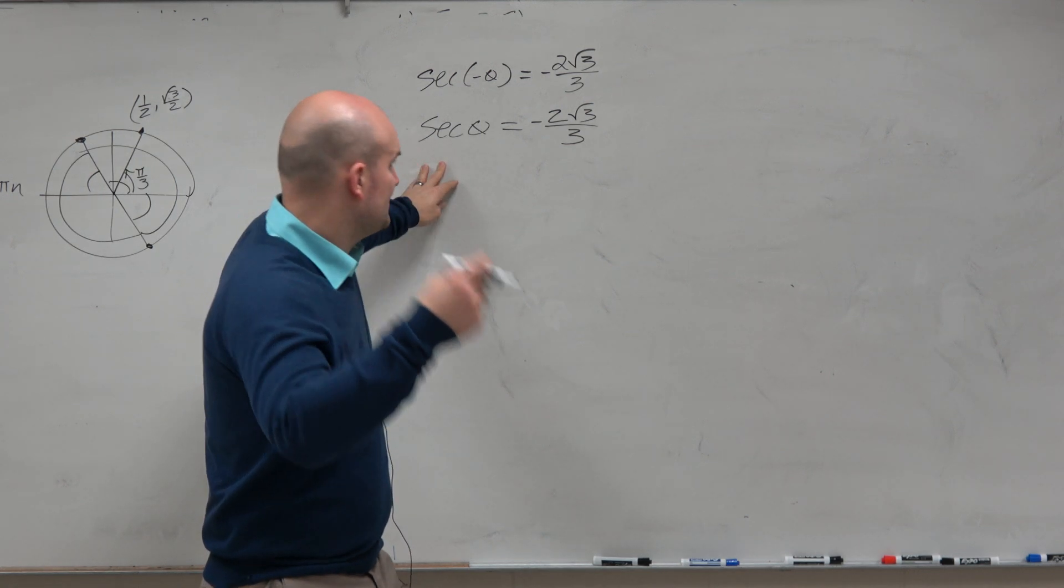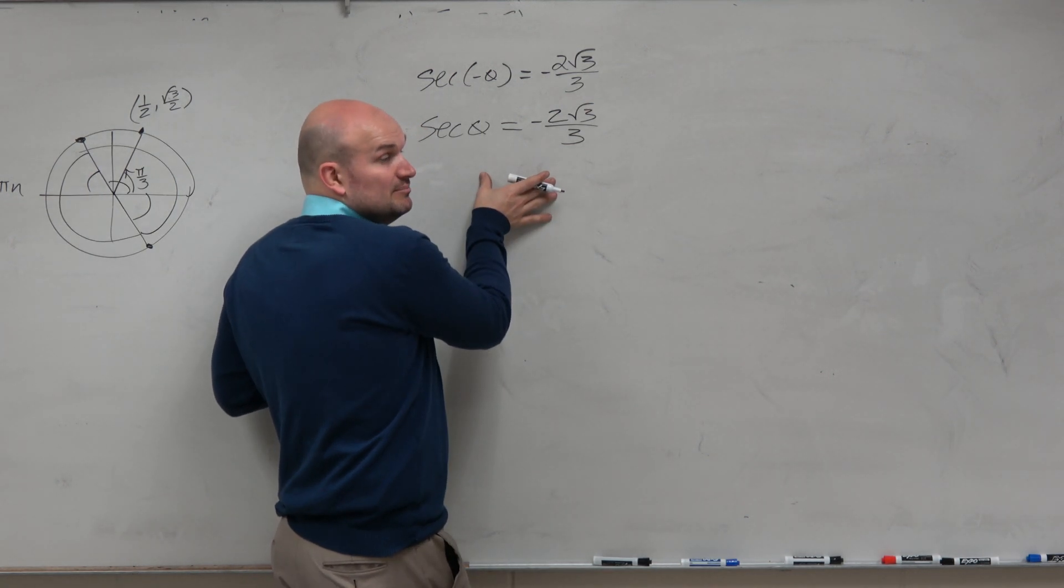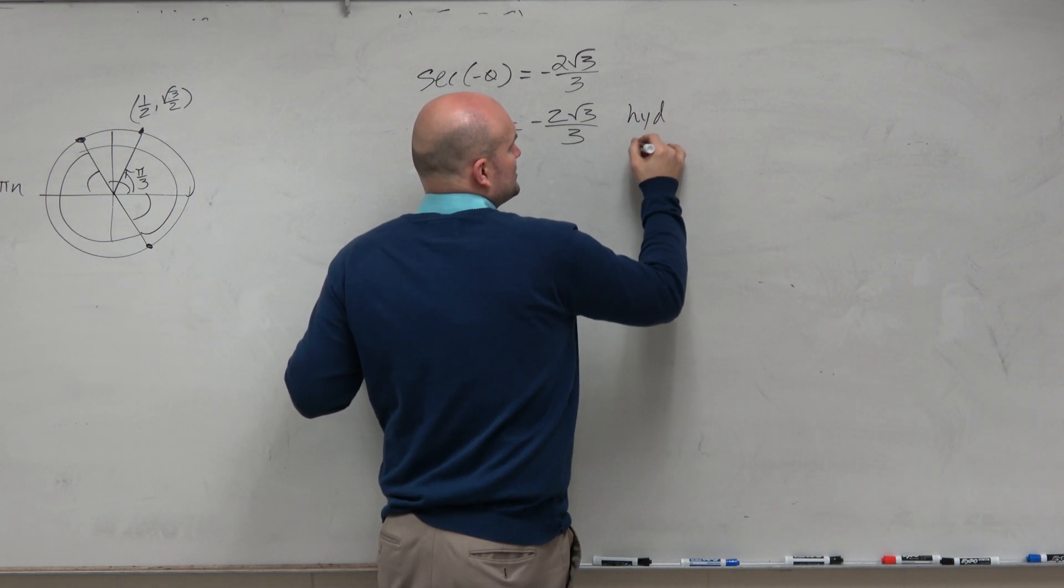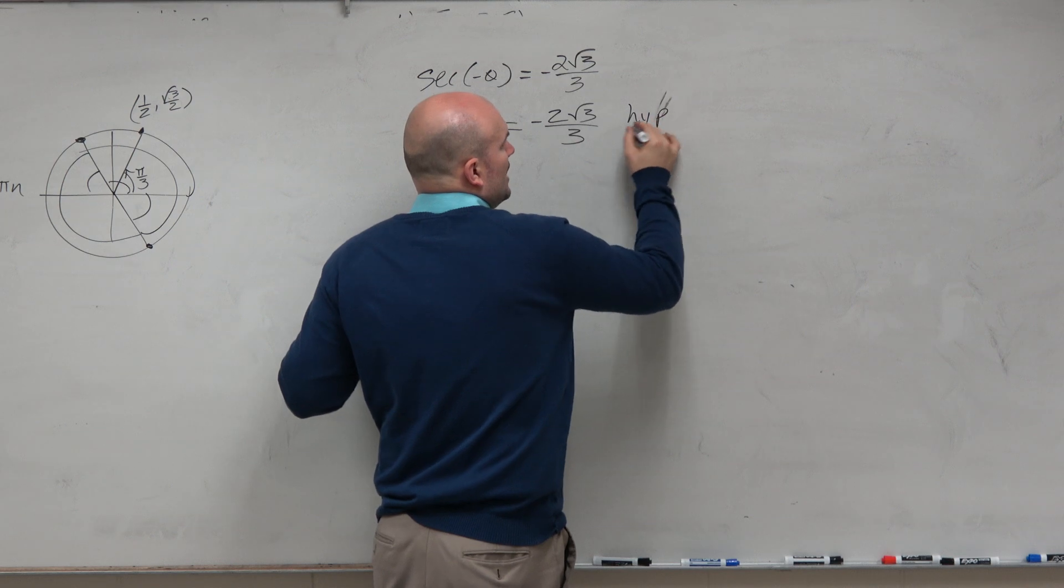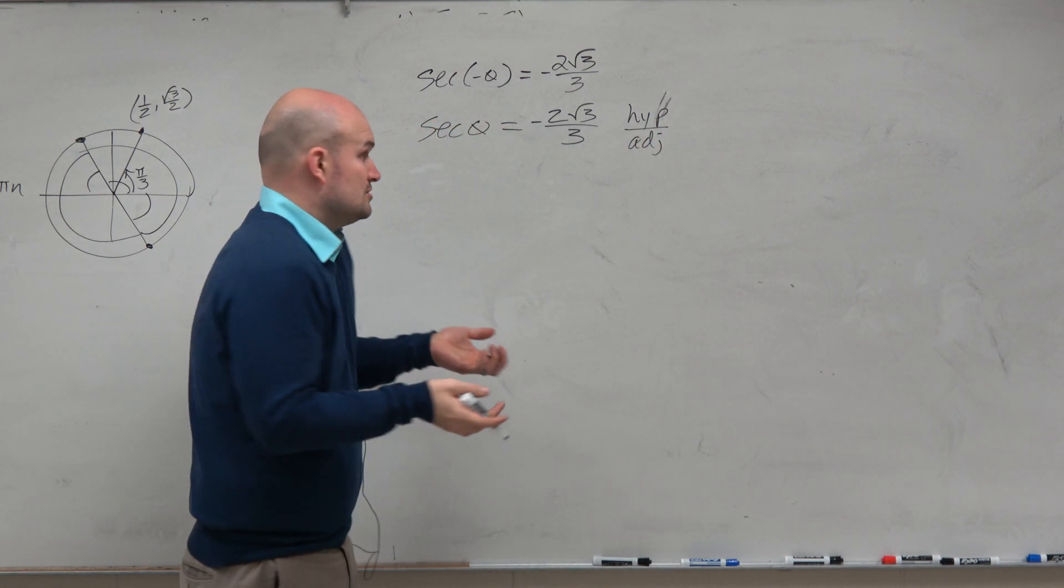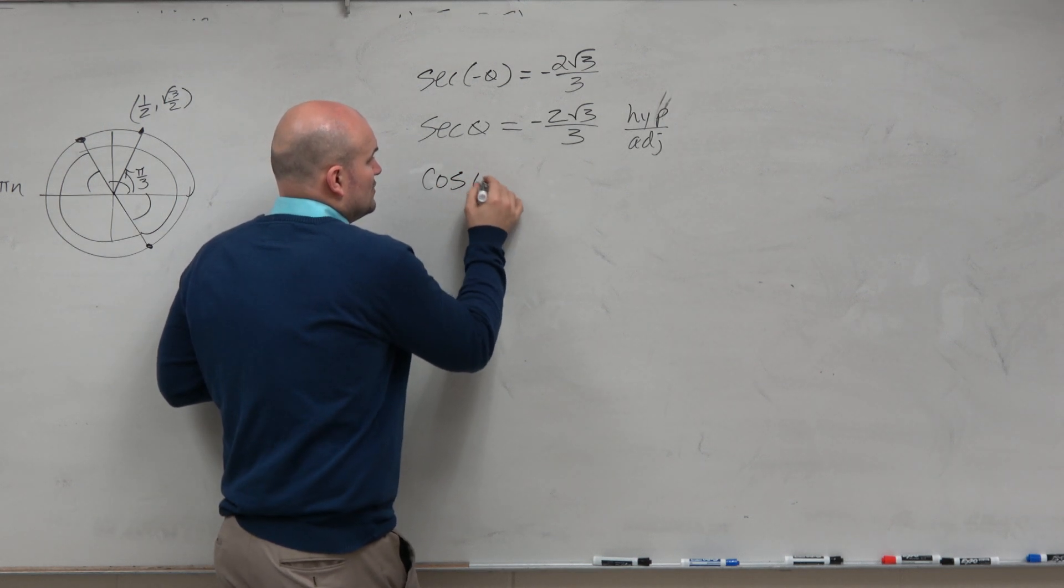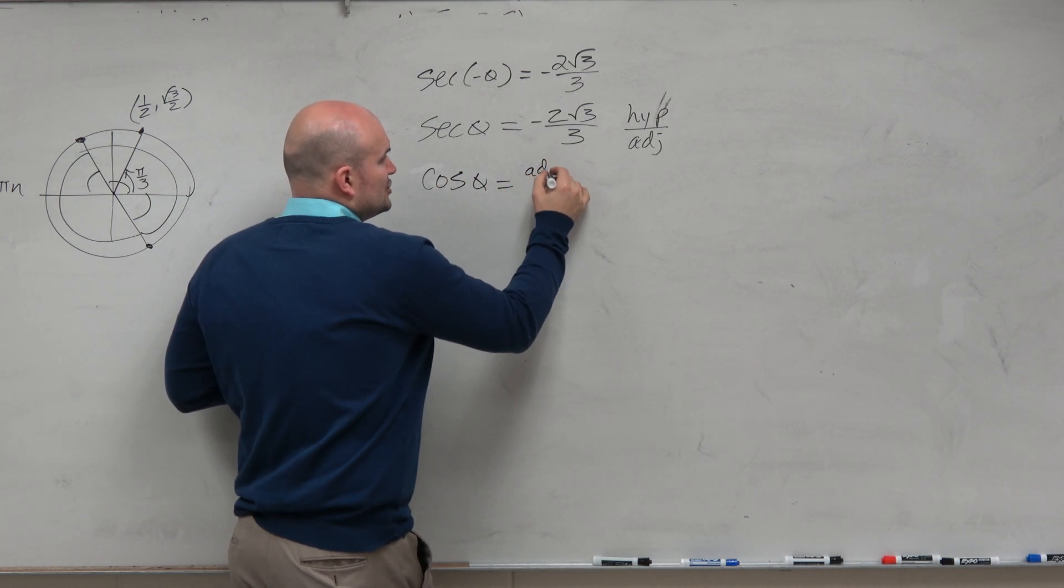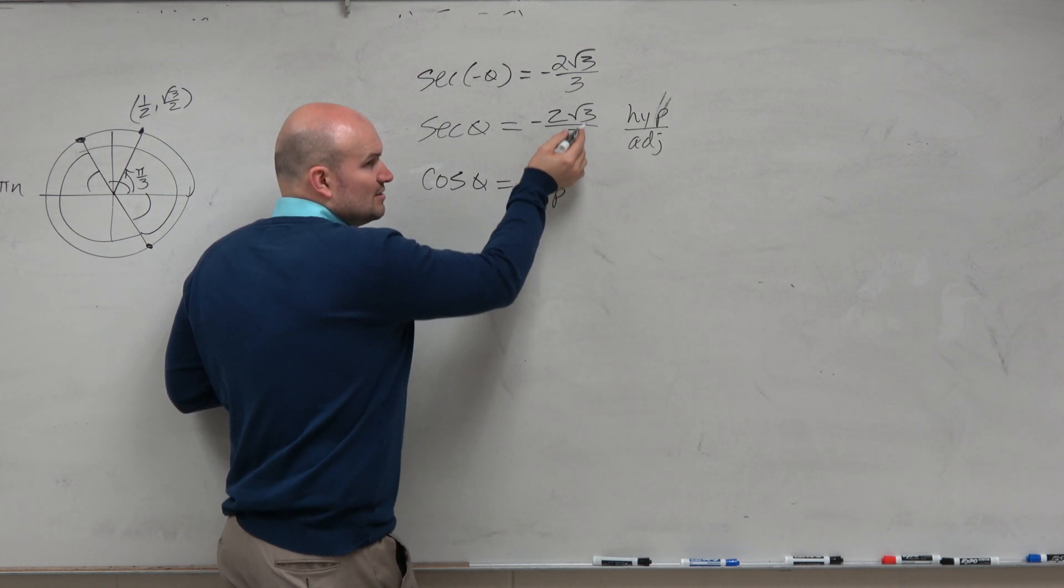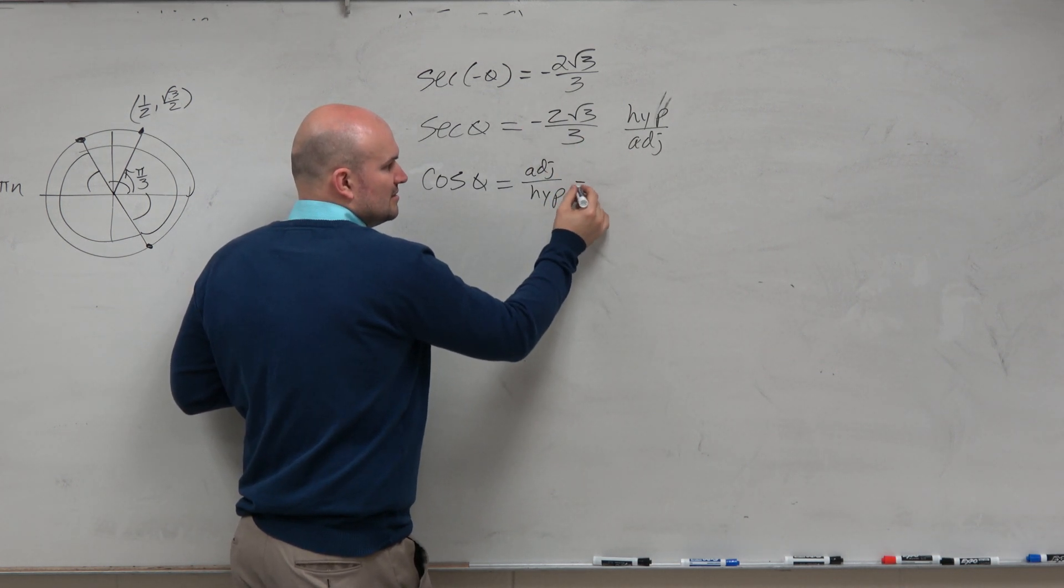So let's think about this a different way. Beginning of the last chapter, we recognized secant as hypotenuse over adjacent. So wouldn't you guys agree then that the cosine of theta is adjacent over hypotenuse? Which is just the reciprocal of this.